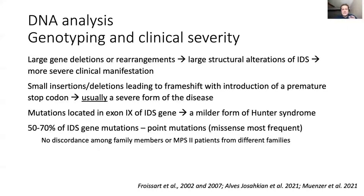In missense mutations, there is one amino acid that is different from the normal IDS enzyme. Based on a Brazilian study, there was no discordance among family members or MPS-2 patients from different families when they have the same point mutation. Usually it means the phenotype was either mild, more severe, or intermediate, but with minimal differences.